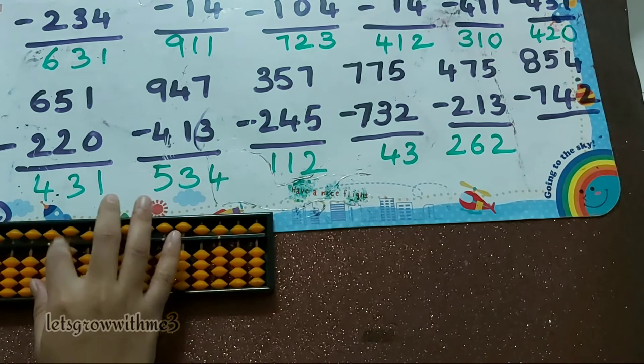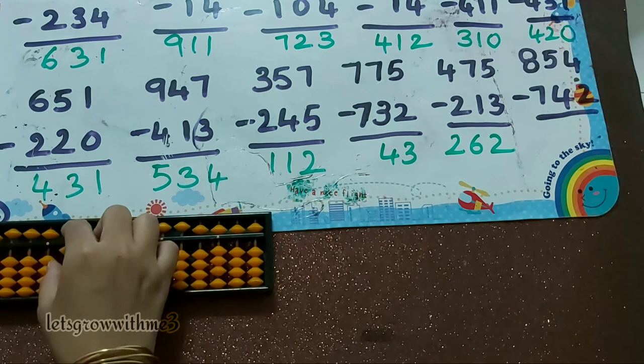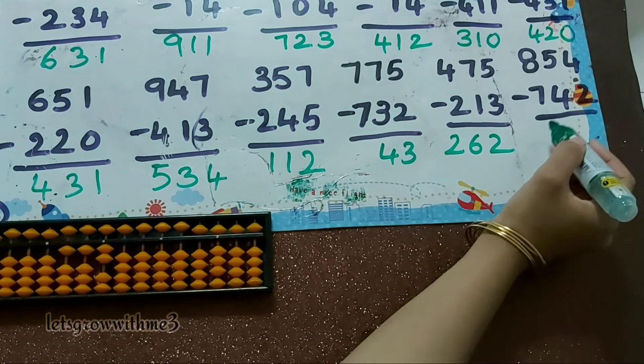Next one, 854 minus 742: minus 4, minus 4 — minus 5 plus 1. Minus 2. So the answer is 112.